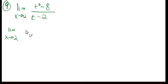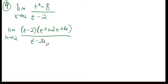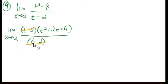The thing about the numerator that you have to remember is it's a difference of cubes. This is t cubed, this is 2 cubed. So the way that factors is t minus 2 times t squared plus 2t plus 4, over t minus 2. We'll just understand that the t minus 2 terms are crossed out.